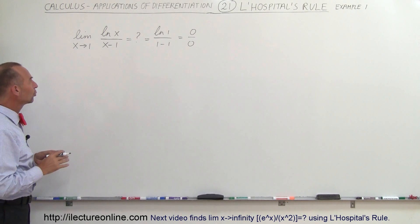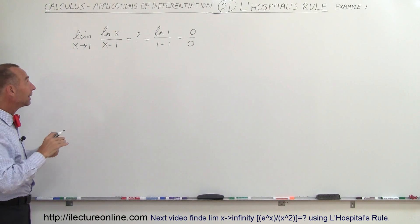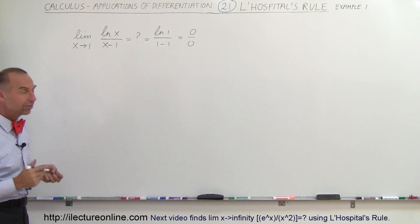So according to L'Hospital's rule we should be able to take the derivative of both the numerator and the denominator and then take the limit as x approaches 1. Let's see what happens.